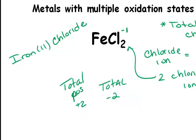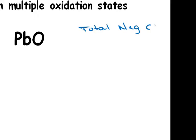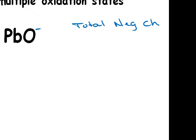Let's look at another example, PbO. Again, we calculate the total negative charge. The oxide ion has a charge of -2, and there's only one of them, so the total negative charge is -2.